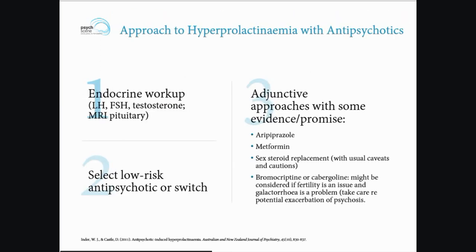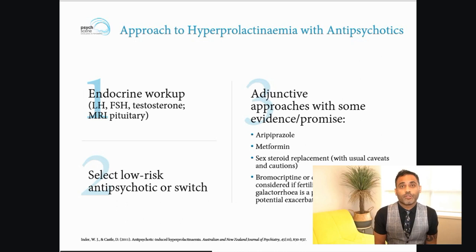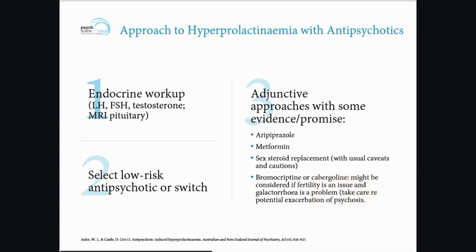The next important side effect that can often be missed is hyperprolactinemia — increased prolactin levels — which happens because of dopamine D2 blockade by antipsychotic medications. Ways to address this include a good endocrine workup: LH, FSH, testosterone, and in some cases an MRI of the pituitary area. Consider switching to a low-risk antipsychotic, and adjunctive approaches such as augmentation with aripiprazole. Newer medications such as brexpiprazole, a partial dopamine agonist, are also available. Other options include augmentation with metformin, sex steroid replacements, and bromocriptine or cabergoline, which are dopamine agonists.